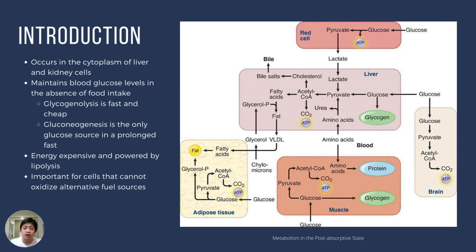Gluconeogenesis is energy expensive. It consumes six ATP molecules to synthesize only one glucose molecule. It is powered by lipolysis. When lipolysis — the breakdown of stored fat — is occurring, there is a concomitant gluconeogenesis also occurring. Because that 6 ATP needed to make glucose through gluconeogenesis will be supplied by breaking the bonds of a fatty acid in beta oxidation.